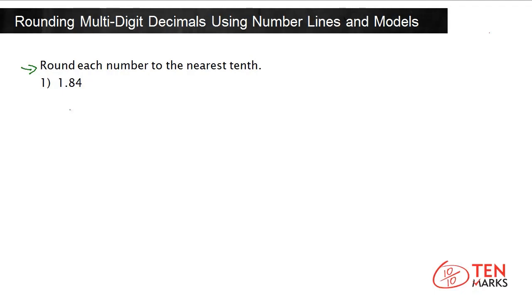You are rounding to the nearest tenth. The tenths place is the first place after the decimal point. You want to round this decimal so that it only has one decimal place.